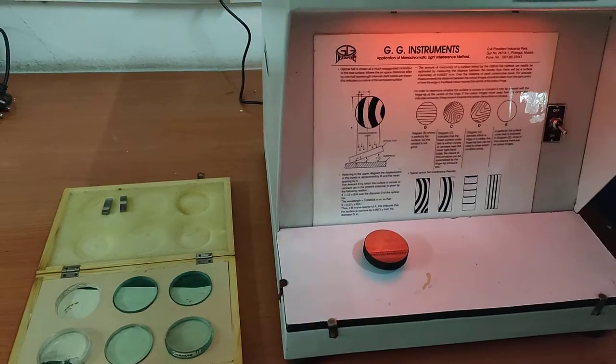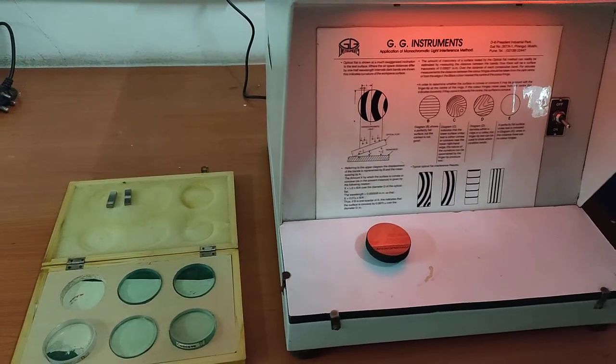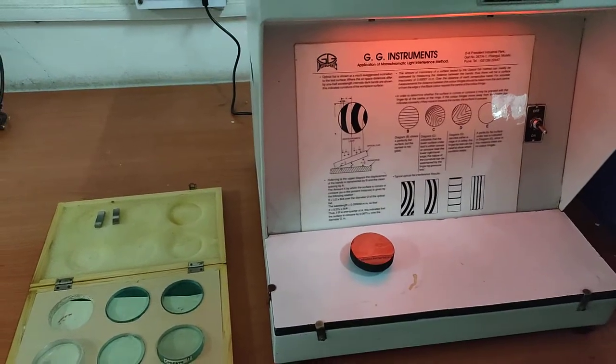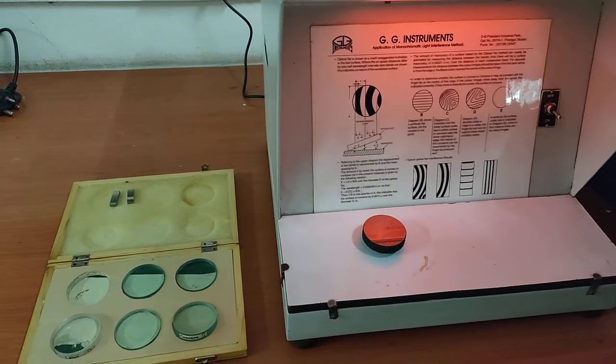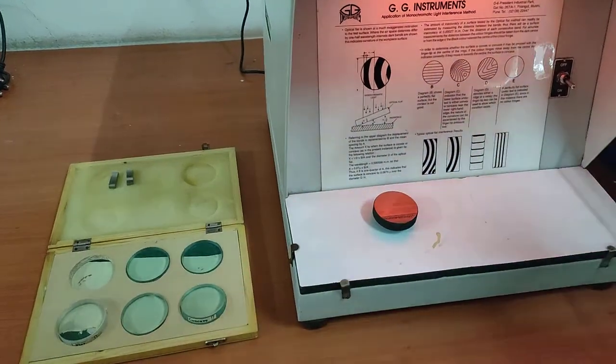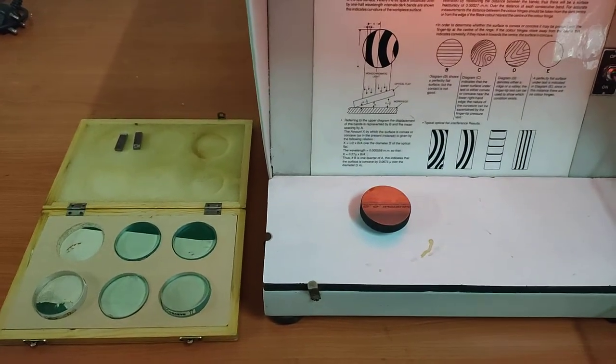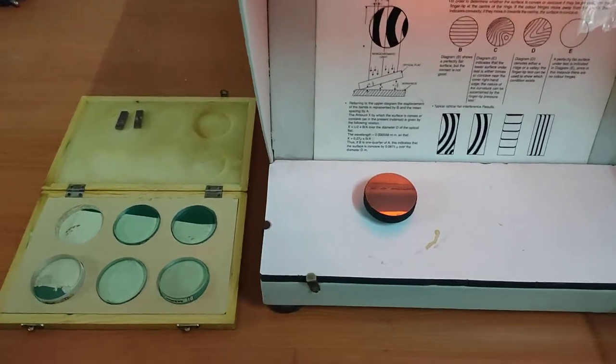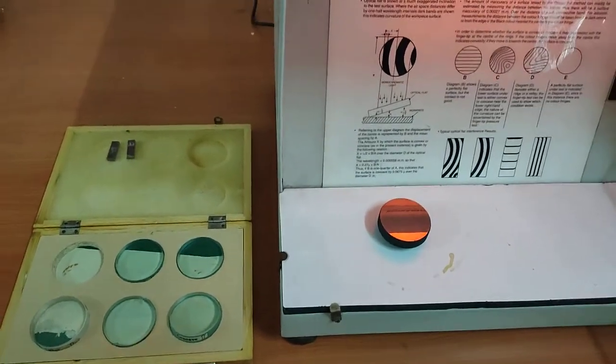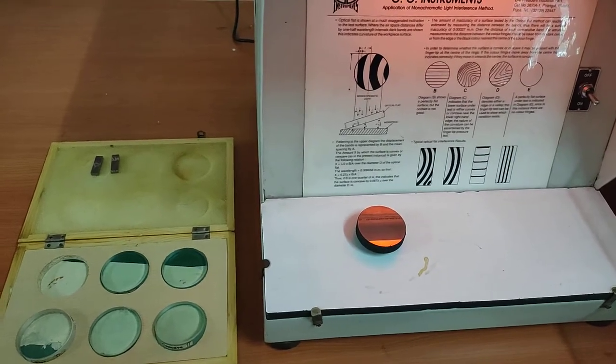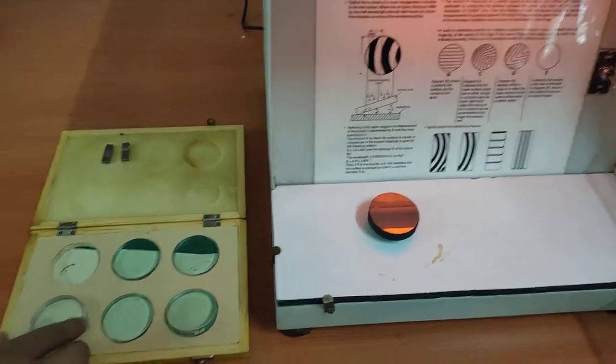We are going to carry out the first portion of factor number 6, that is demonstration of surface inspection using optical flat or interferometer. We are going to apply interferometry for flatness testing. For measurement of light wave interferences, monochromatic light source and set of optical flats are required.